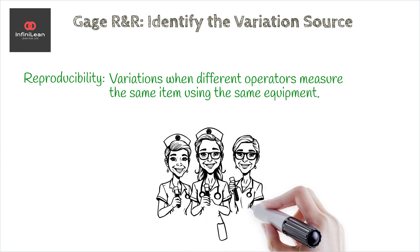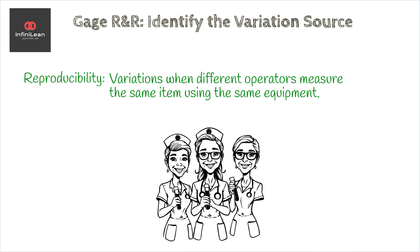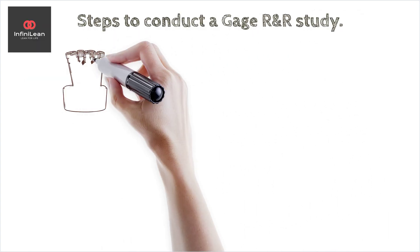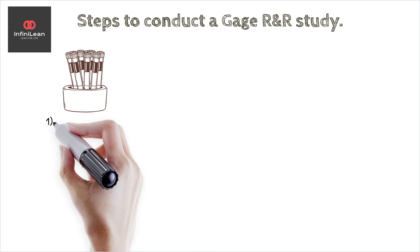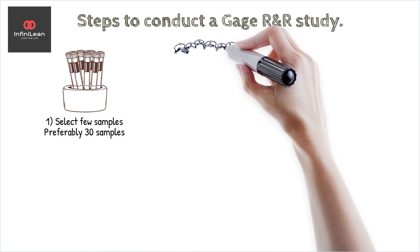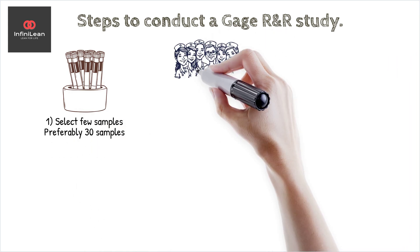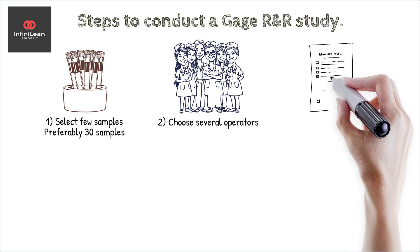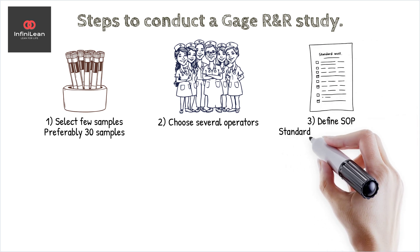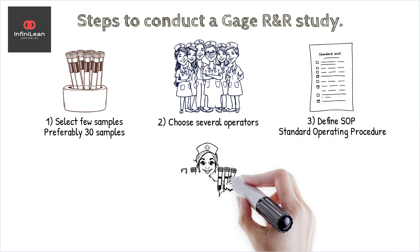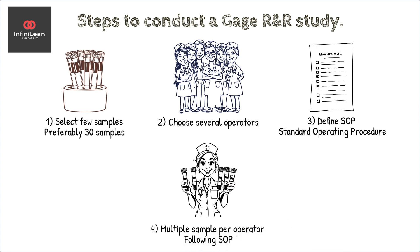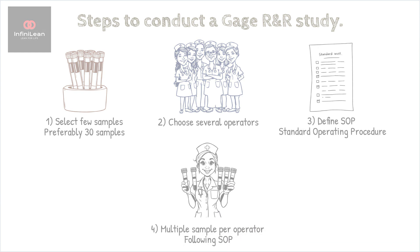So how do we conduct a Gauge R&R study? Typically, it involves selecting a few parts representing the full range of the process variation, choosing several operators, and defining the measurement process clearly. Each operator measures each part multiple times, strictly following the same procedure.